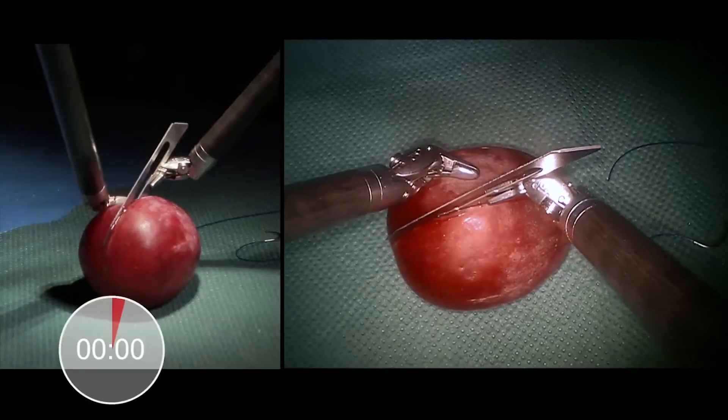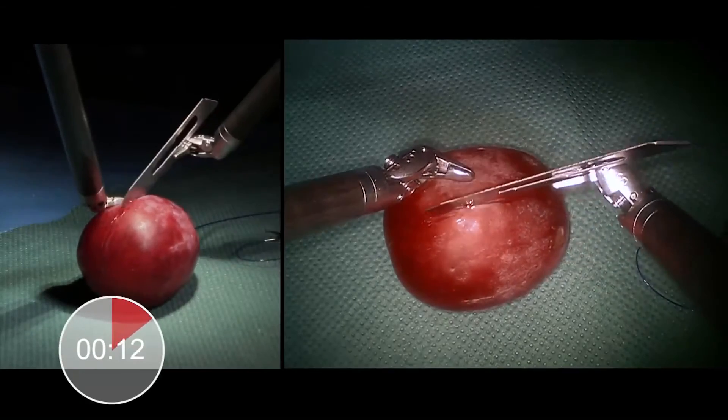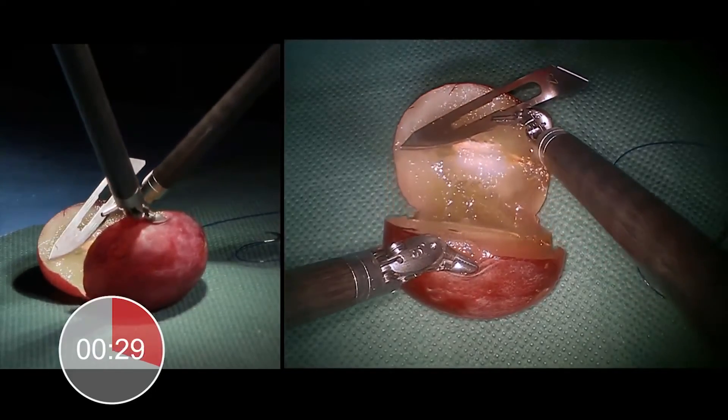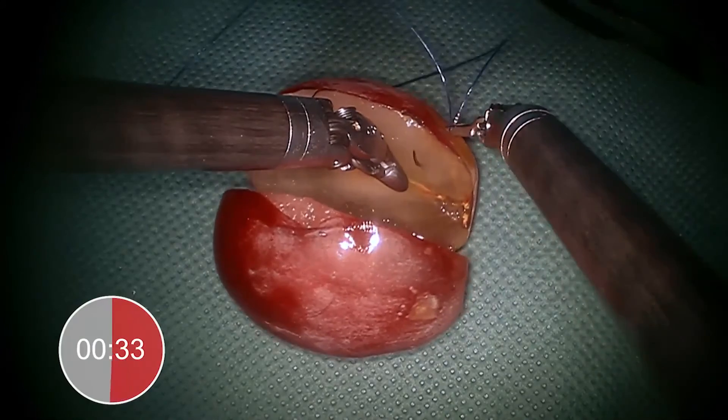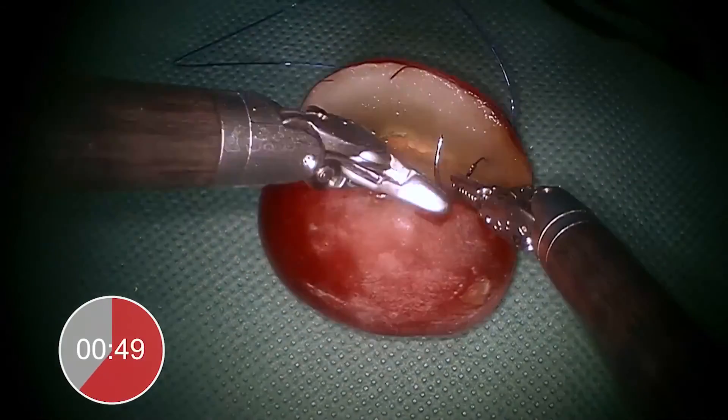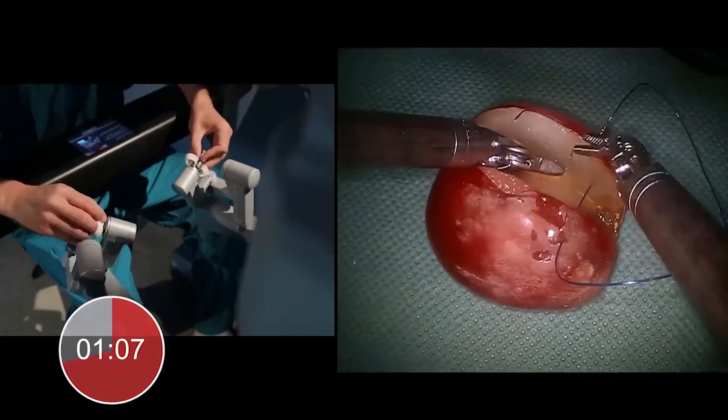And the last task is to cut and then sew together a small grape. It took the system less than ten seconds and only one movement to tie a knot with the thread.